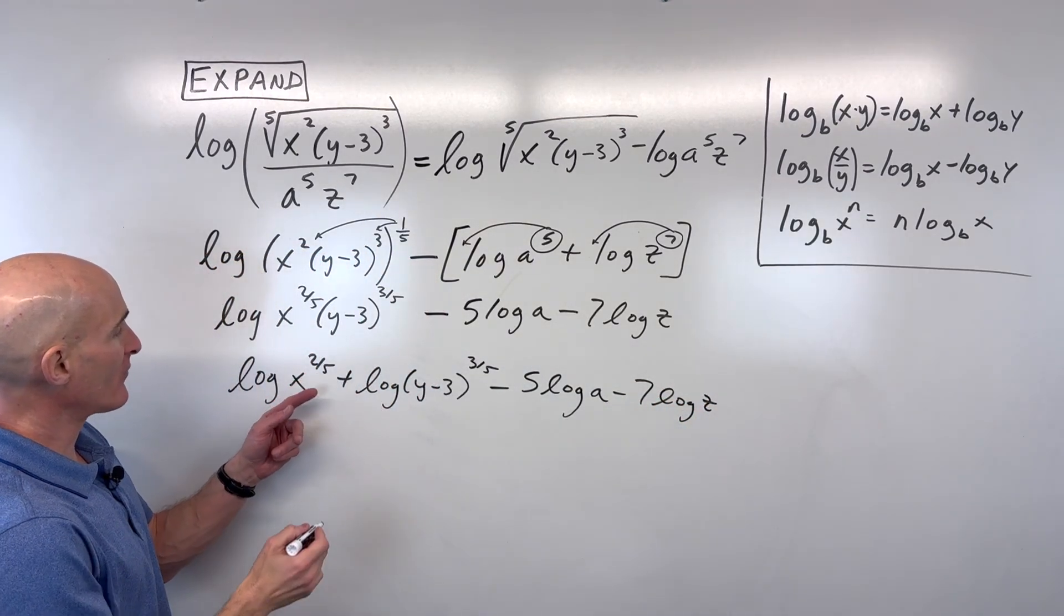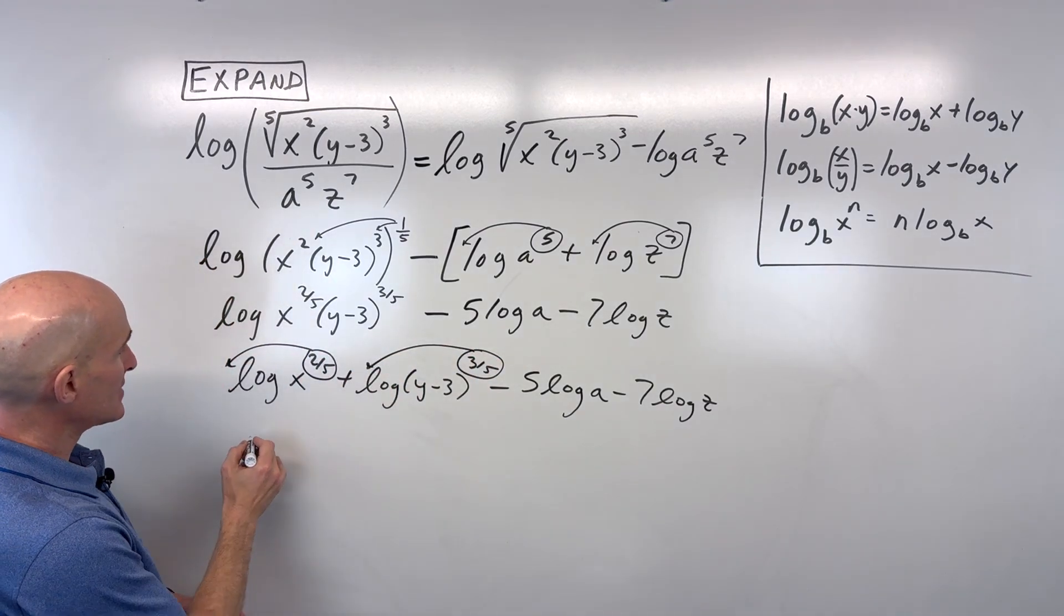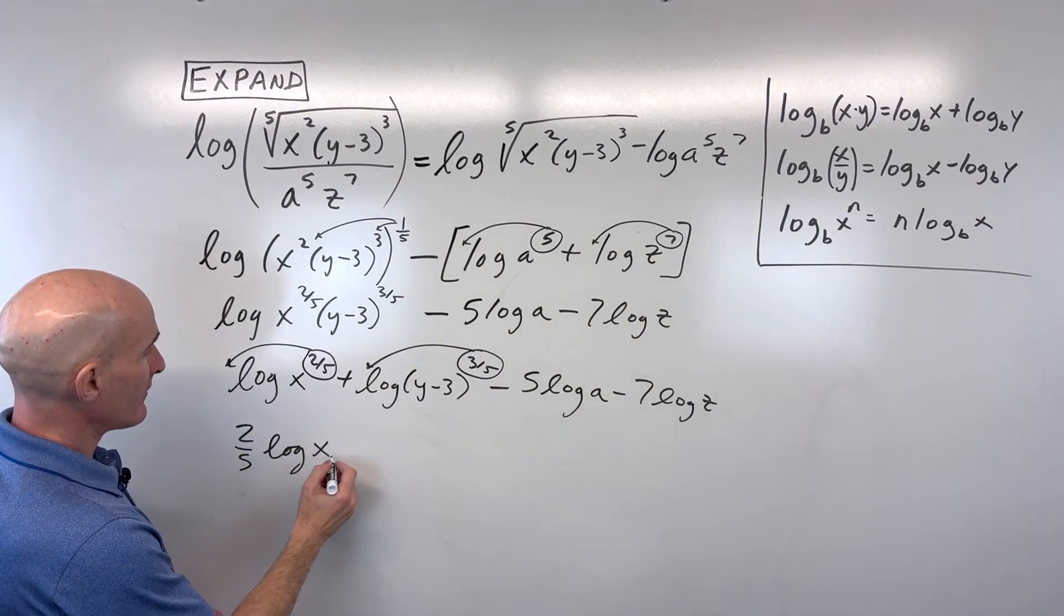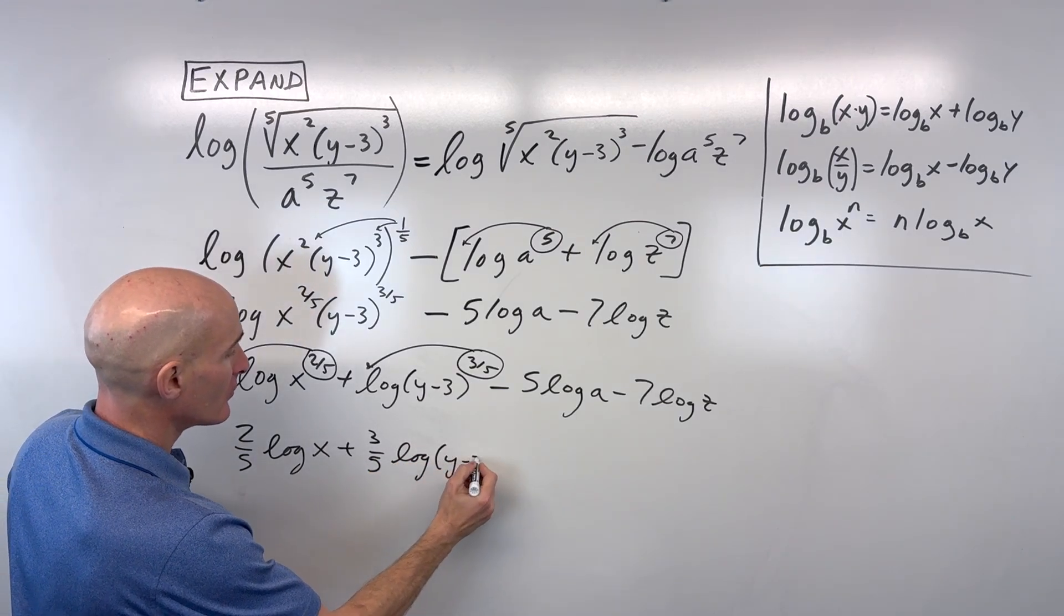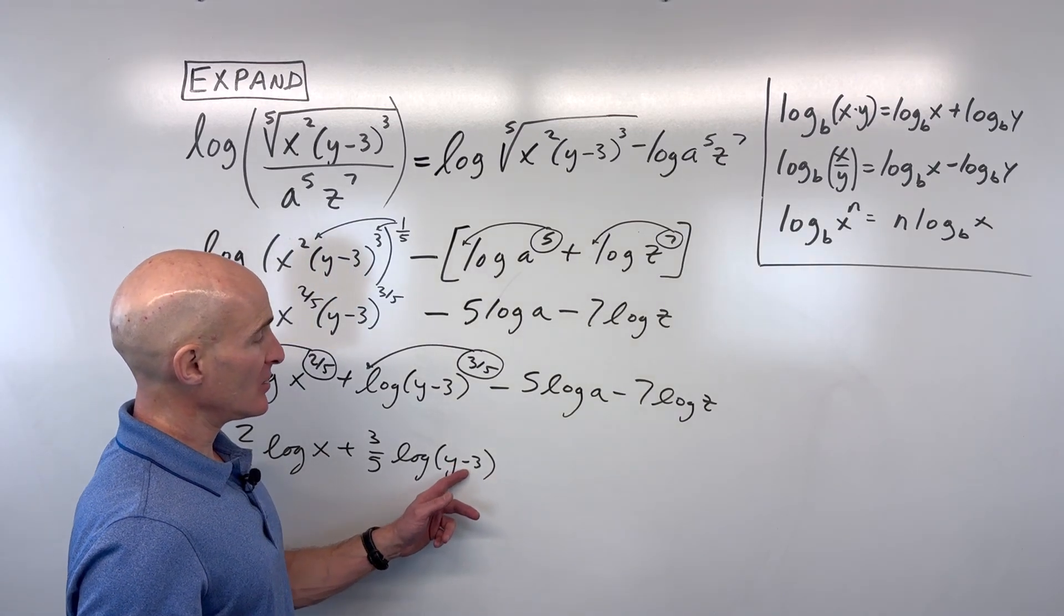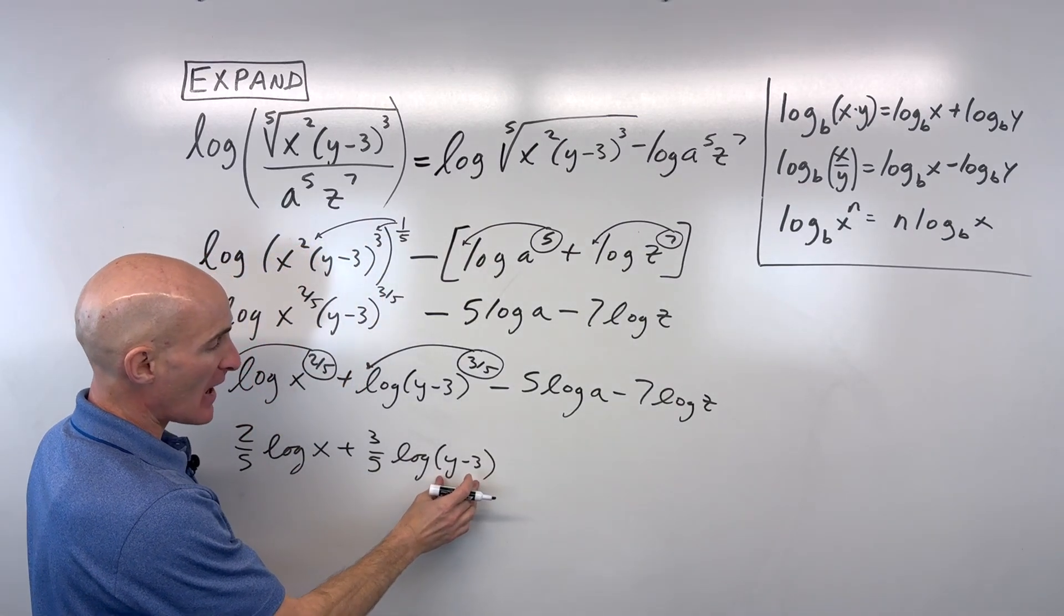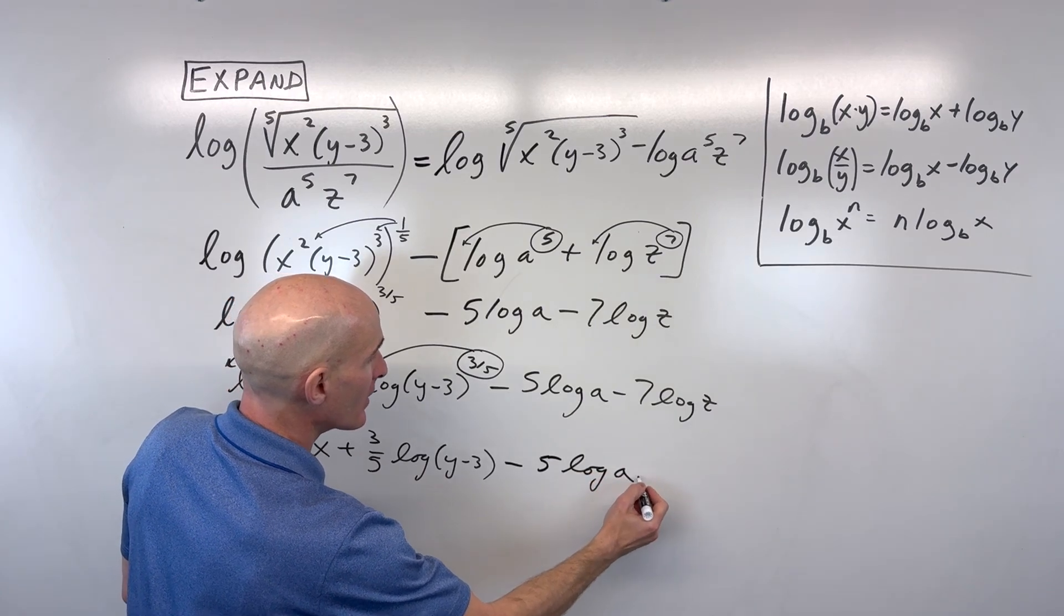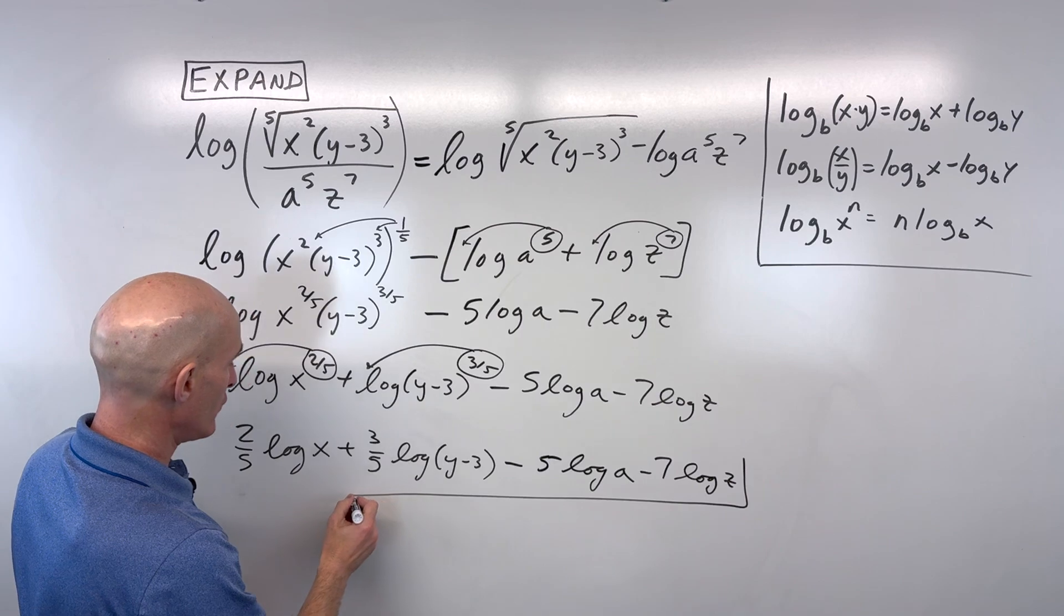So now we've got some exponents here. We can use our power property to bring those down in front. And let's see what this looks like. So it looks like we have two-fifths log of x plus three-fifths log of the quantity y minus 3. We can't really expand this. It's not division. It's not multiplication. We don't have the power. It's just this binomial, this quantity y minus 3. That's as far as we can go. Minus 5 log of a minus 7 log of z. And that's fully expanded.